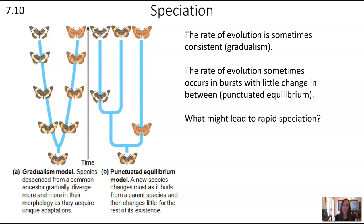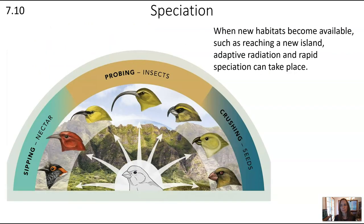What might lead to rapid speciation? One of the most common causes is when new habitats become available — for example, birds finding a new island, like the finches in the Galapagos. When a bird or small group of birds reaches a new island, adaptive radiation and rapid speciation can take place because there are so many available niches in the environment that these birds can adapt to fill different ecological roles.